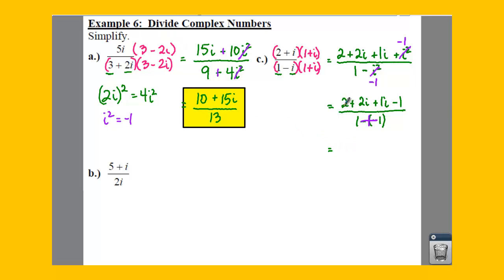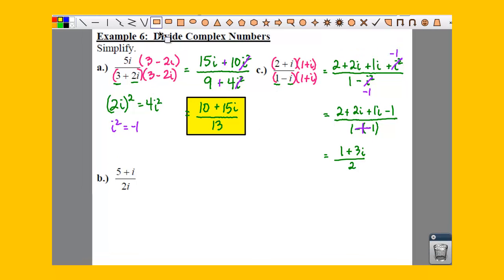So your final solution, you add your real parts together. 2 minus 1 gives you a 1 plus 3i all over 2. So that is going to be your solution.